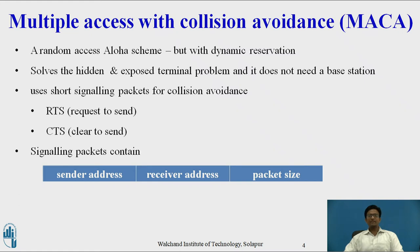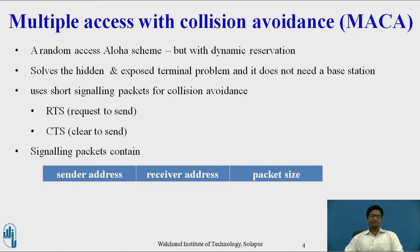RTS is sent by the sender, which requests the right to send before sending any data packet. CTS is sent by the receiver, which grants the right to send as soon as it is ready to receive. These signaling packets consist of sender address, receiver address, and the packet size.